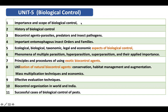The first topic is the importance and scope of biological control. The term means that an insect pest is controlled by a biological organism — that may be a parasitoid, predator, or insect pathogen. We have to study why it is so important, what the benefits are of using biological control agents, and what the future scope is.